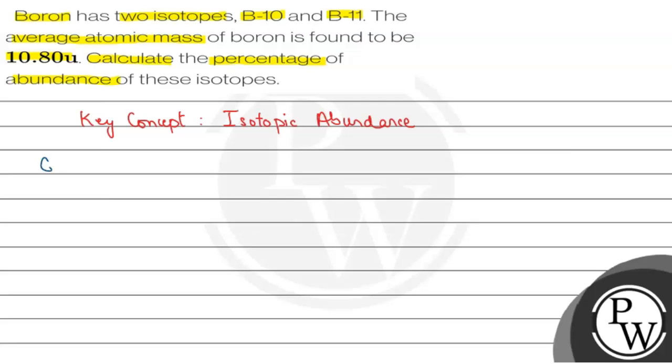Let's first write down the information provided in the question. Given in the question is that Boron exists as two isotopes: one with mass number 10 and Boron with mass number 11. Also, the average atomic mass is given to be 10.80u.